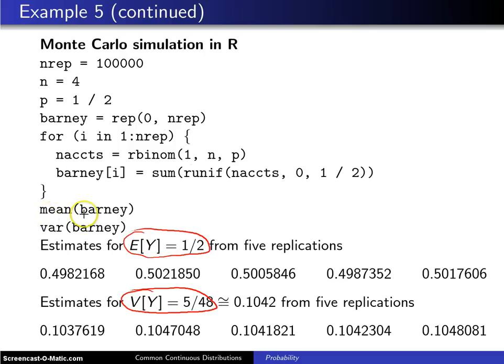Finally, if you find the mean of all of those, and the variance of all of those experiments in the vector Barney, the means you can see here, ran it five times, they are hovering around one-half.